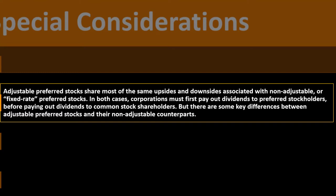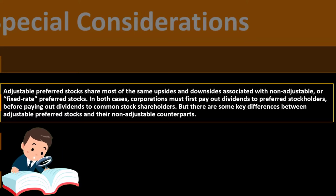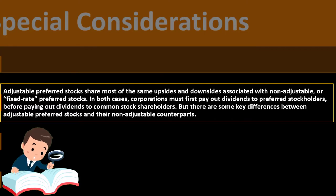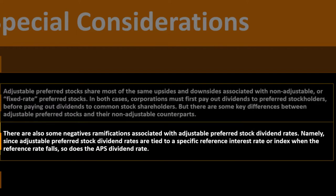Adjustable preferred stocks share most of the same upsides and downsides associated with non-adjustable or fixed rate preferred stock — similar in nature to an adjustable versus fixed rate mortgage situation. In both cases, corporations must first pay out dividends to preferred stockholders before paying dividends to common stock shareholders. But there are some key differences between adjustable preferred stocks and their non-adjustable counterparts.